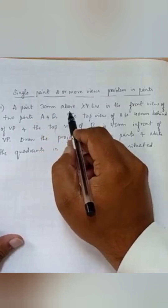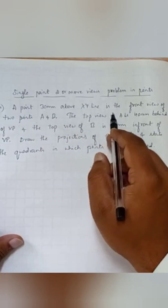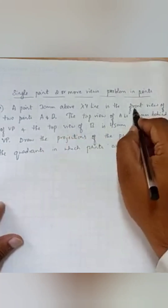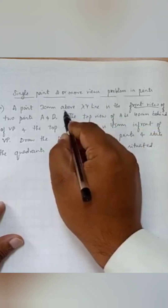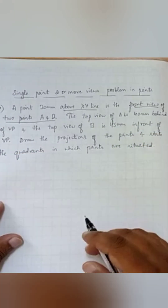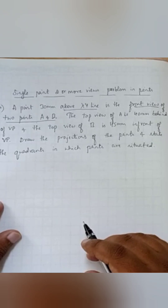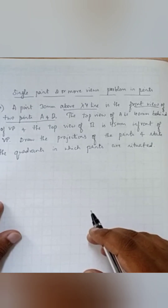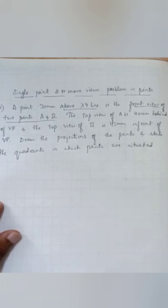30mm above XY line is the front view of two points A and B. The question mentions that the front view, that is A-dash and B-dash, will be lying above the XY line at a distance of 30mm. So that's what it is directly mentioning, and we will be proceeding with the question.